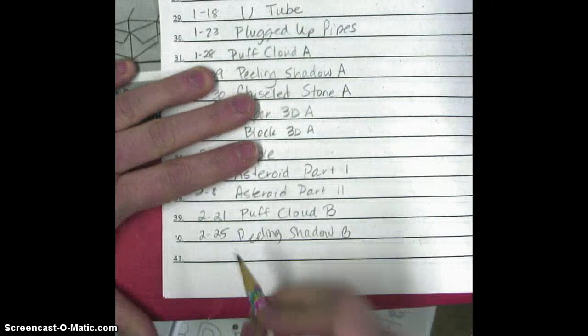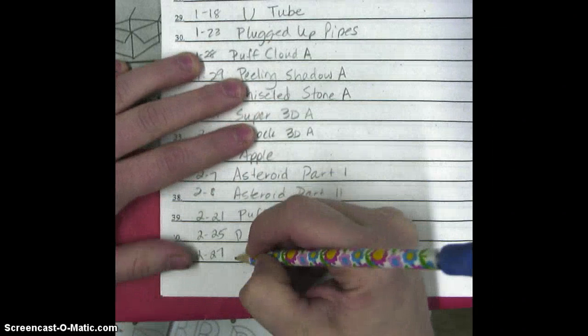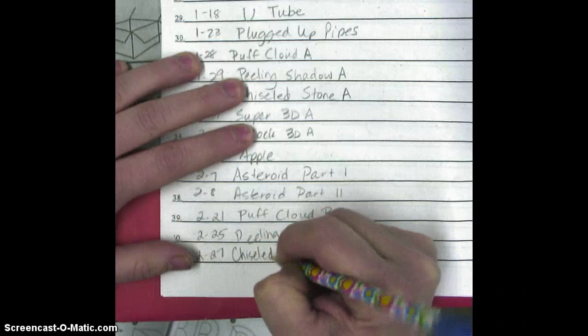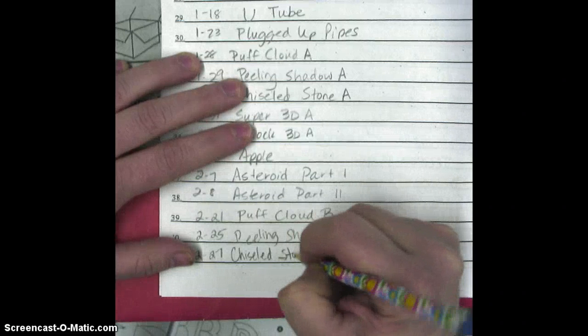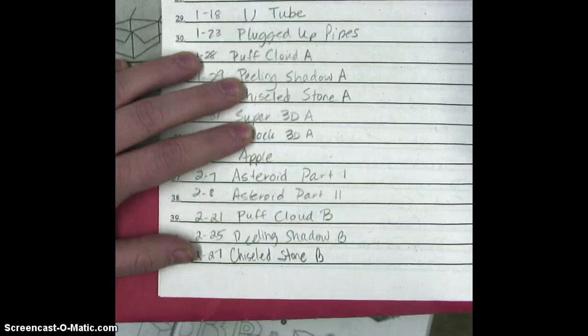Today is February the 26th, excuse me, not the 26th, the 27th, February the 27th, and our title is Chiseled, C-H-I-S-E-L-E-D, Stone B. Chiseled Stone B.